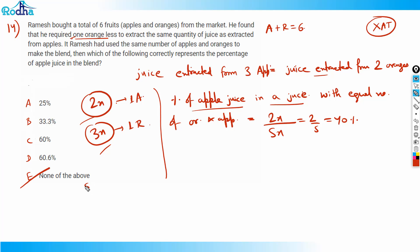So the answer is option number 5. The question asks: if Ramesh had used the same number of apples and oranges to make the blend, what is the percentage of apple juice? With equal numbers — that is 1 apple and 1 orange — the percentage of apple juice is 2x out of 5x, which is 40%.